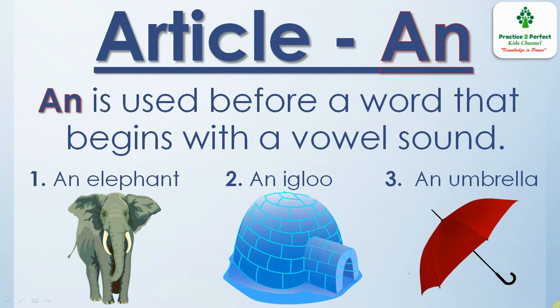Both the articles a and an also mean one in number. Like for one book you can say a book, and for one egg you can say an egg.